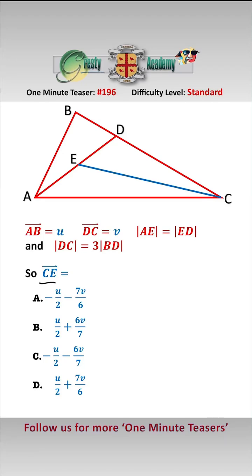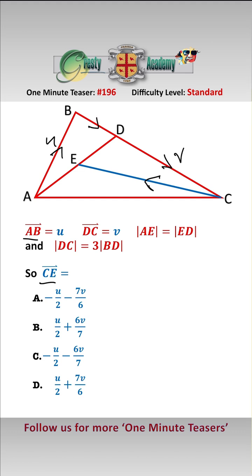We need to find the vector CE, which is an equivalent path to CD and then DE. We've got AB equal to U, and DC equals V, and therefore we know that BD is equal to V over 3, because we know that DC is 3BD.